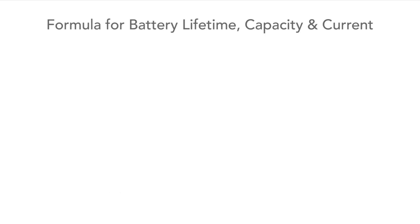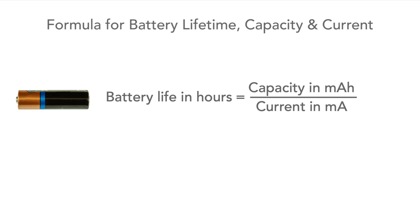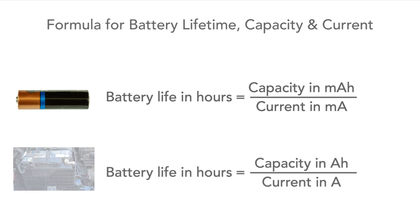There's a very simple formula for finding out how long a battery will give a certain level of current. The battery life is simply the battery capacity in milliamp hours divided by the continuous load current in milliamps. For larger batteries, the life is the battery capacity in amp hours divided by the load current in amps.